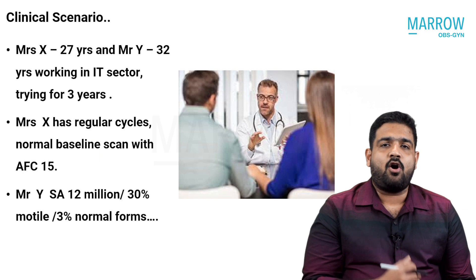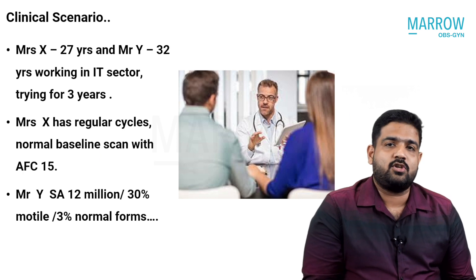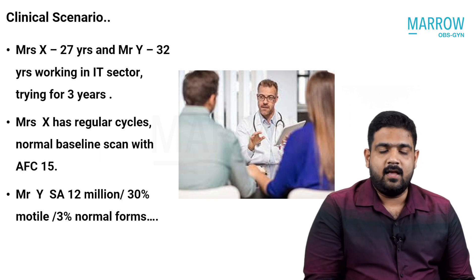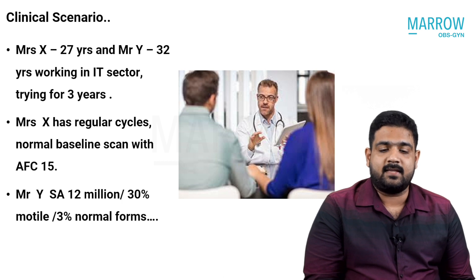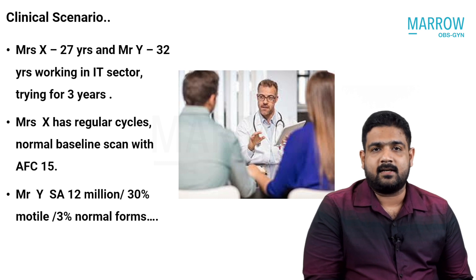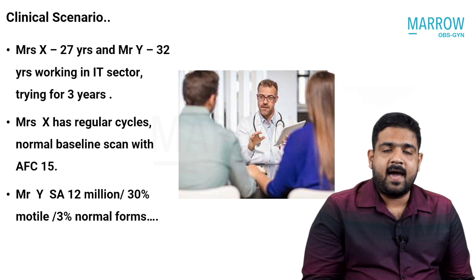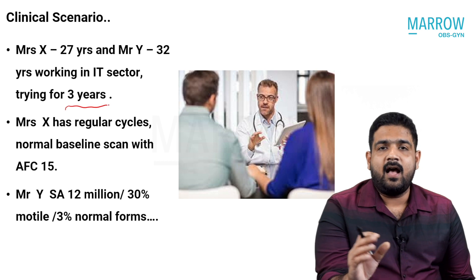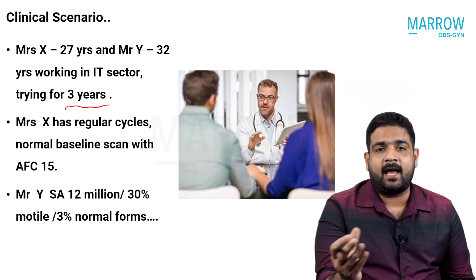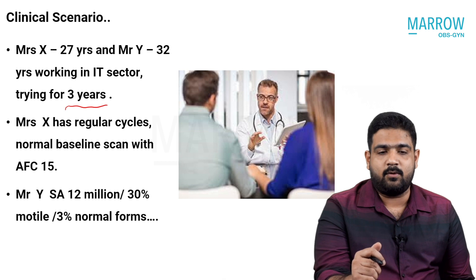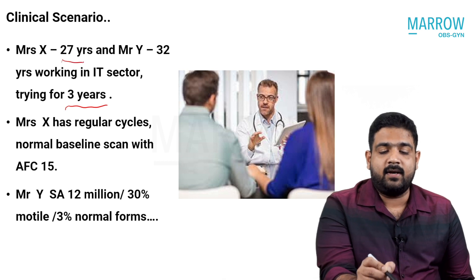We have a common clinical scenario which occurs usually in our clinics. There is a patient who is Mrs. X, she is 27 years old, and Mr. Y, he is 32 years old. Both are in the IT sector. They are married for a period of three years, which is a reasonable time to conceive — that is the pre-requisite for IUI. They are a reasonably young couple at 27 and 32.